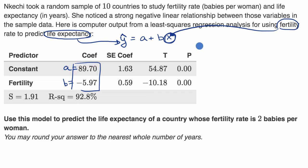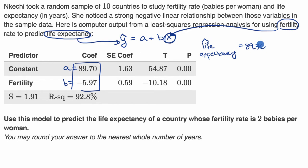We can rewrite this as: estimated life expectancy (with a hat to show it's estimated) is going to be equal to 89.70 minus 5.97 times fertility rate. Notice: negative 5.97 is the coefficient on fertility, and 89.70 is the constant coefficient.